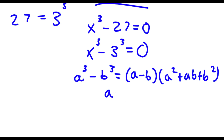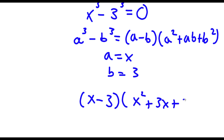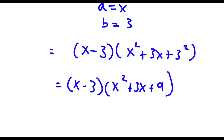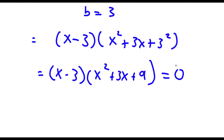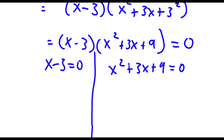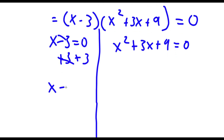So in this case a is equal to x and b is equal to 3. So now I have x minus 3 times x squared plus 3x plus 3 squared, which is x minus 3 times x squared plus 3x plus 9, and this is equal to 0. This gives me two equations: x minus 3 equals 0, and x squared plus 3x plus 9 equals 0. For x minus 3 equals 0, I just add 3 to both sides, and I'm left with x is equal to 3. So this is one solution.